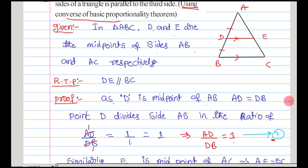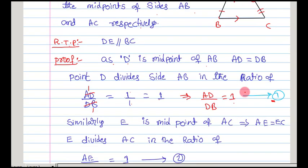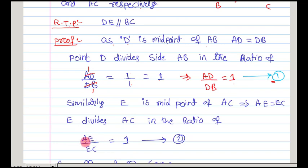Similarly, point E is the midpoint of AC, so we can write that AE is equal to EC. Because E is at equal distance from A and C, AE equals EC. Then point E divides AC in the ratio AE by EC. Since both are equal quantities, they cancel, giving a 1 is to 1 ratio. I am supposing that as equation 2.